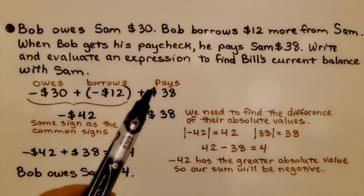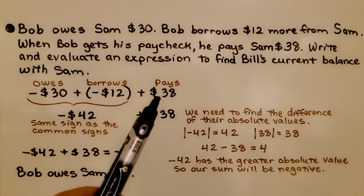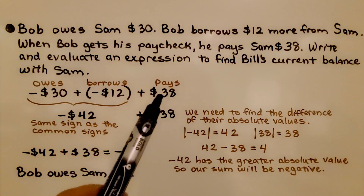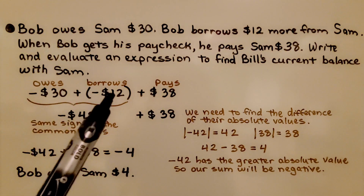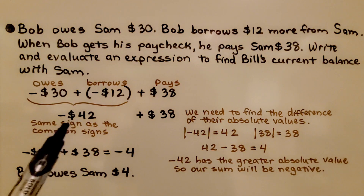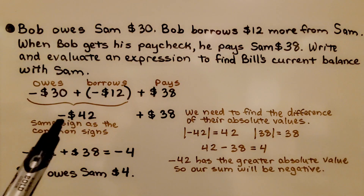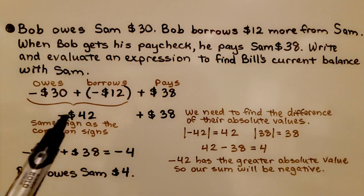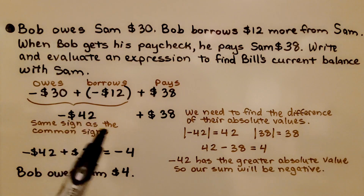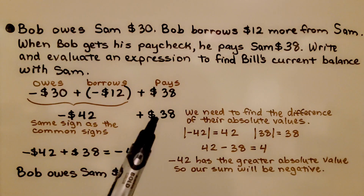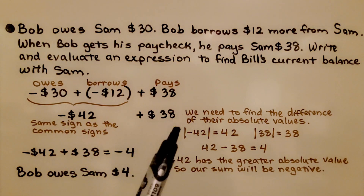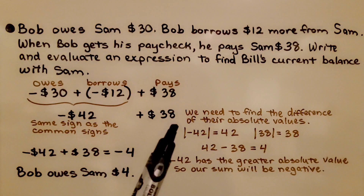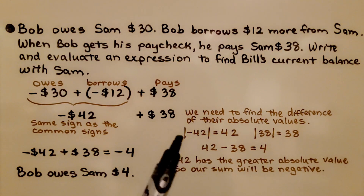They're both negative, and we can add the debts together. Then we can add the $38 when he pays them back. We have negative 30 plus negative 12 — they have the same sign, so we're going to have negative 42. Now when he pays them back the $38, we have a negative and a positive, so we need to find the difference of their absolute values.